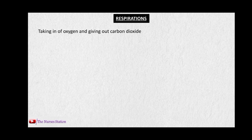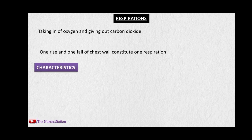The next vital sign is respiration. Respiration involves taking in oxygen and giving out carbon dioxide. One rise and one fall of the chest wall constitutes one respiration cycle. Characteristics of respiration include: rate — number of breaths per minute; rhythm — whether regular or irregular; and depth — the volume inhaled and exhaled during respiration.